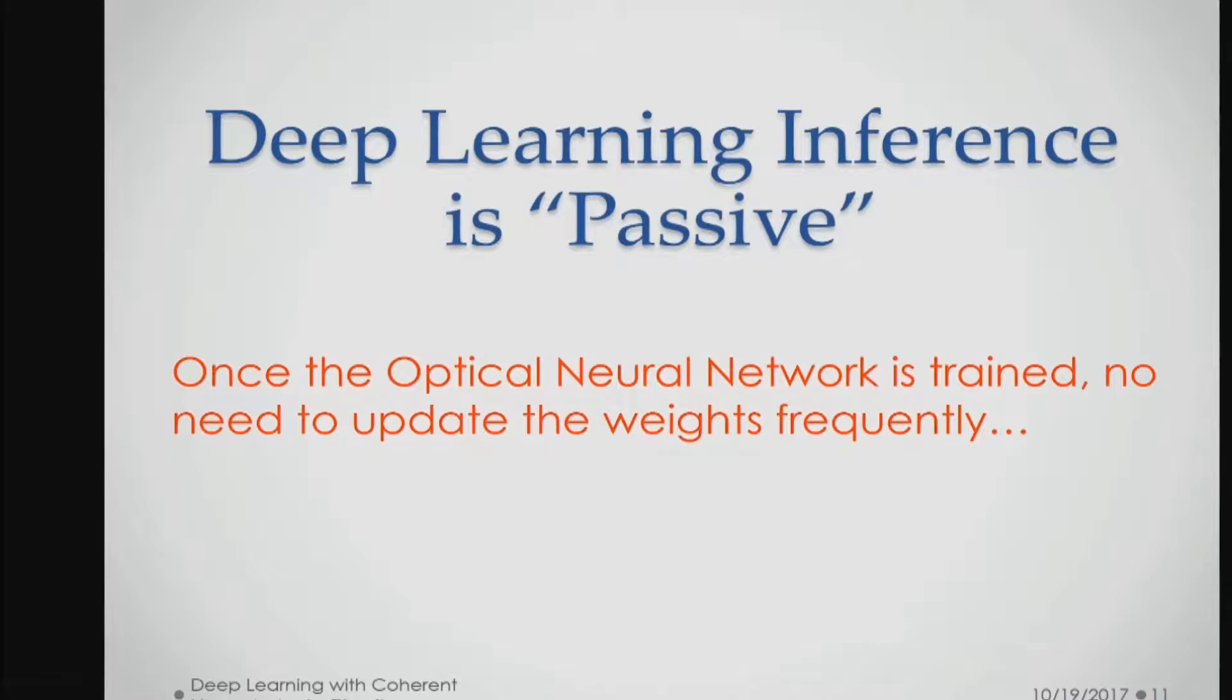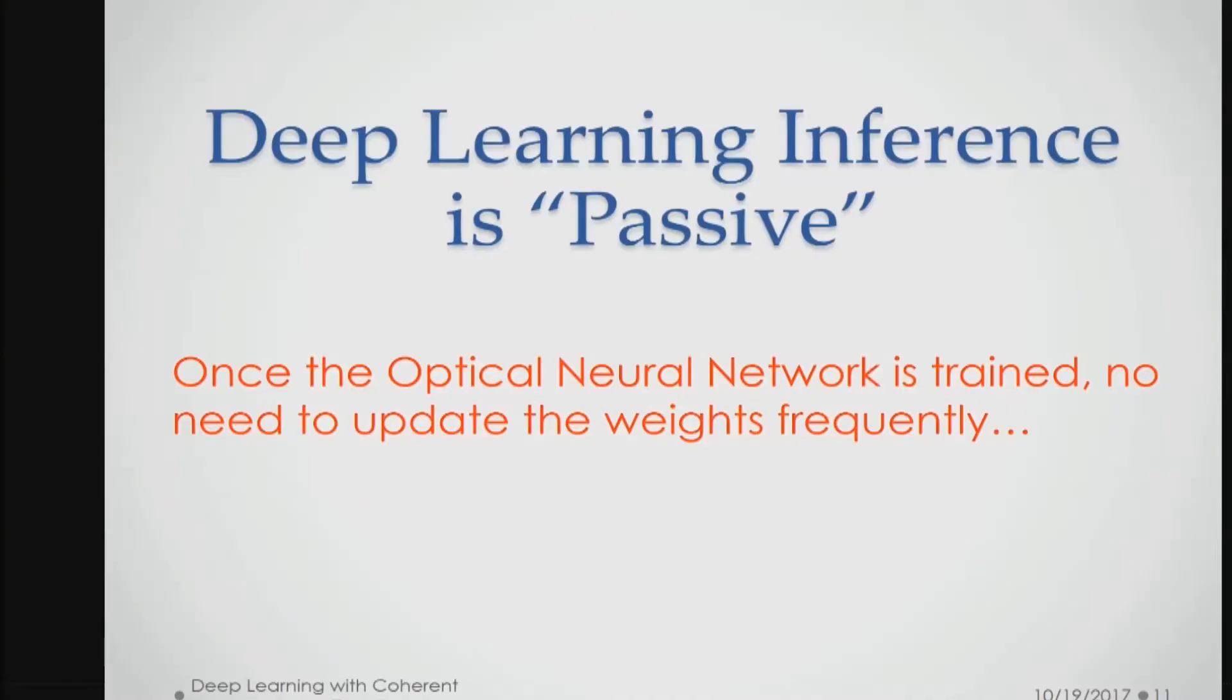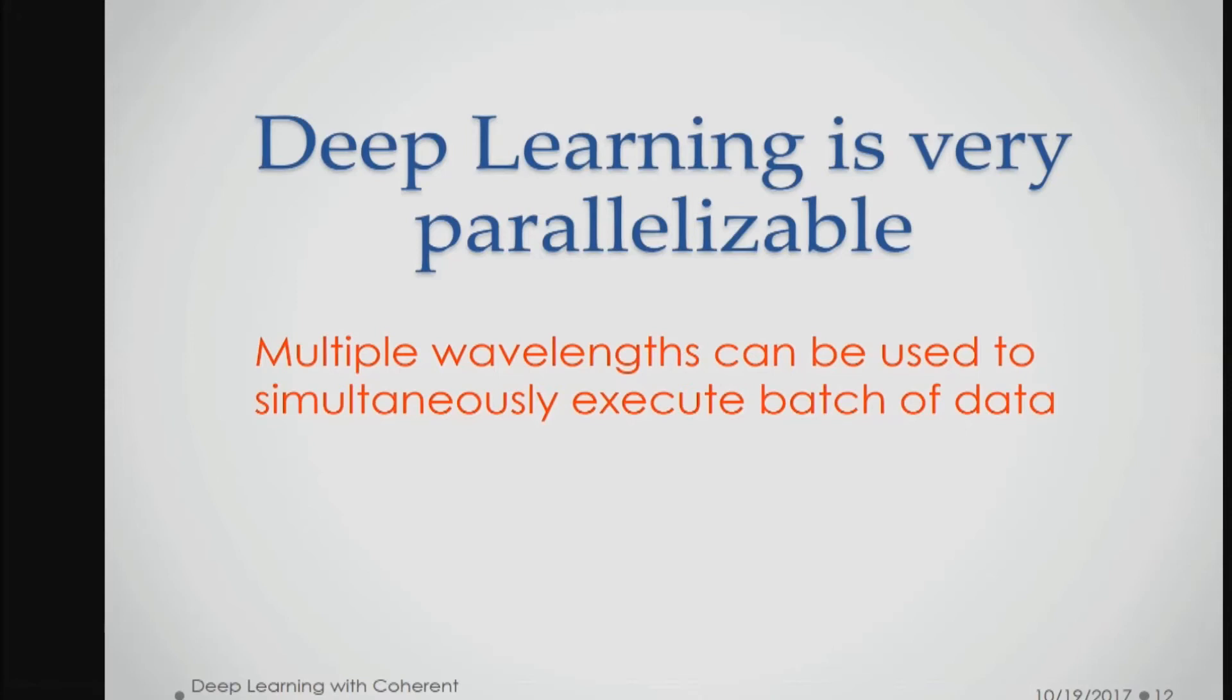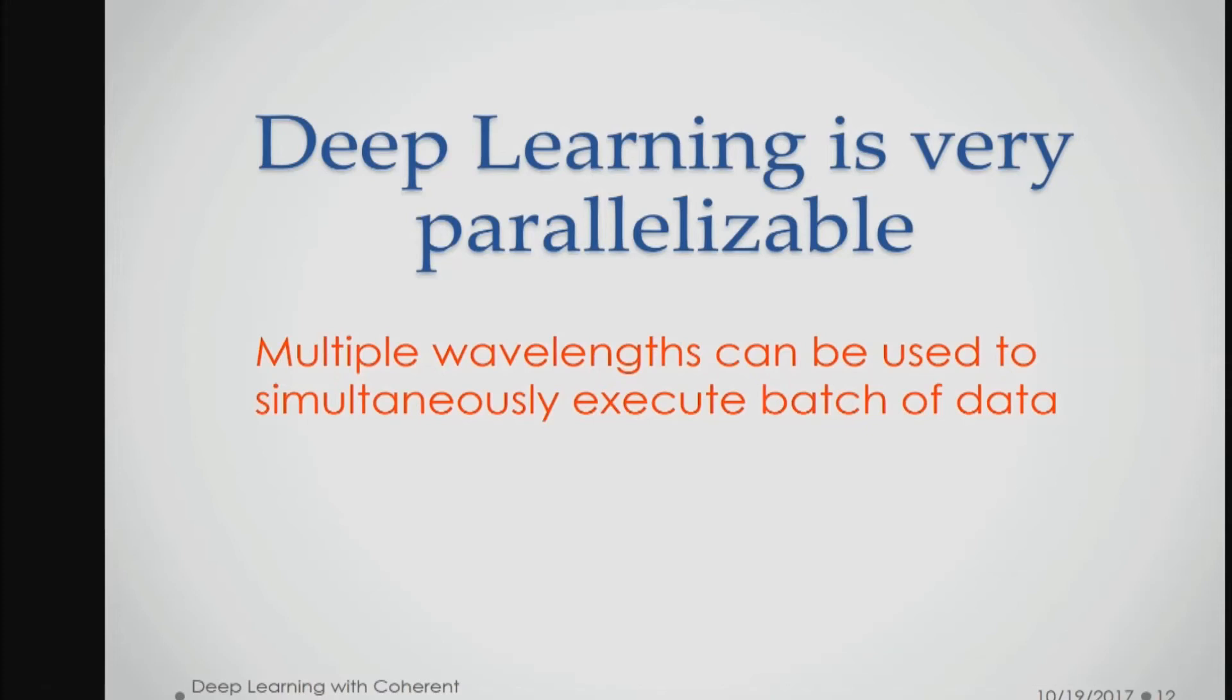Deep learning inference is a passive task—your weight is fixed. One challenge for optics is you cannot change its properties that fast, but for inference your whole weight matrix is fixed. All you need is to send signal through this, so it's very good for optical processing. Finally, deep learning is very parallelizable. You usually use the same neural network to recognize, say, a billion images. You can send a billion images in multiple wavelengths—maybe 20 different wavelengths through the same chip at the same time. Different wavelength signals won't interfere with each other, so you can do parallel processing that electronics cannot do.